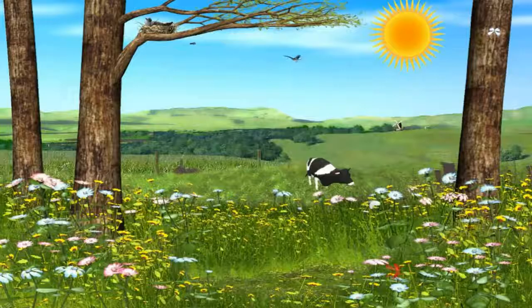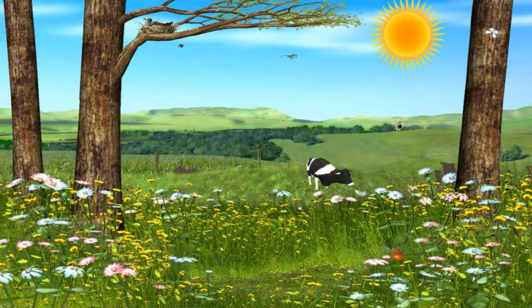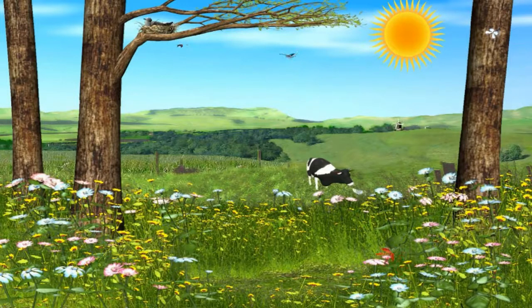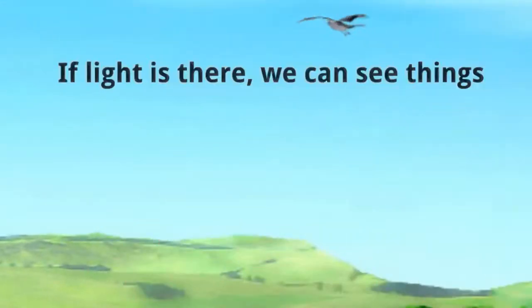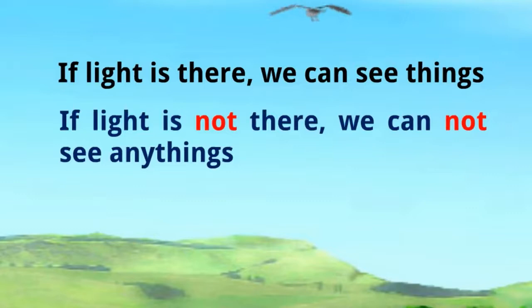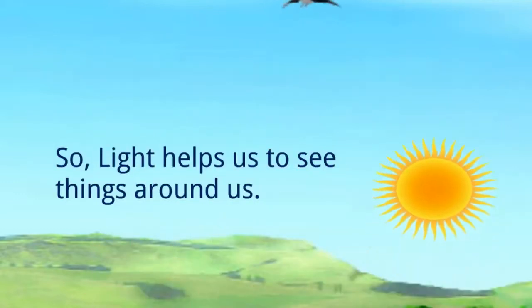But the next day again, sunrise, and you will see everything once again. If light is there, we can see everything. If light is not there, we cannot see anything. So we can say light helps us to see things around us.